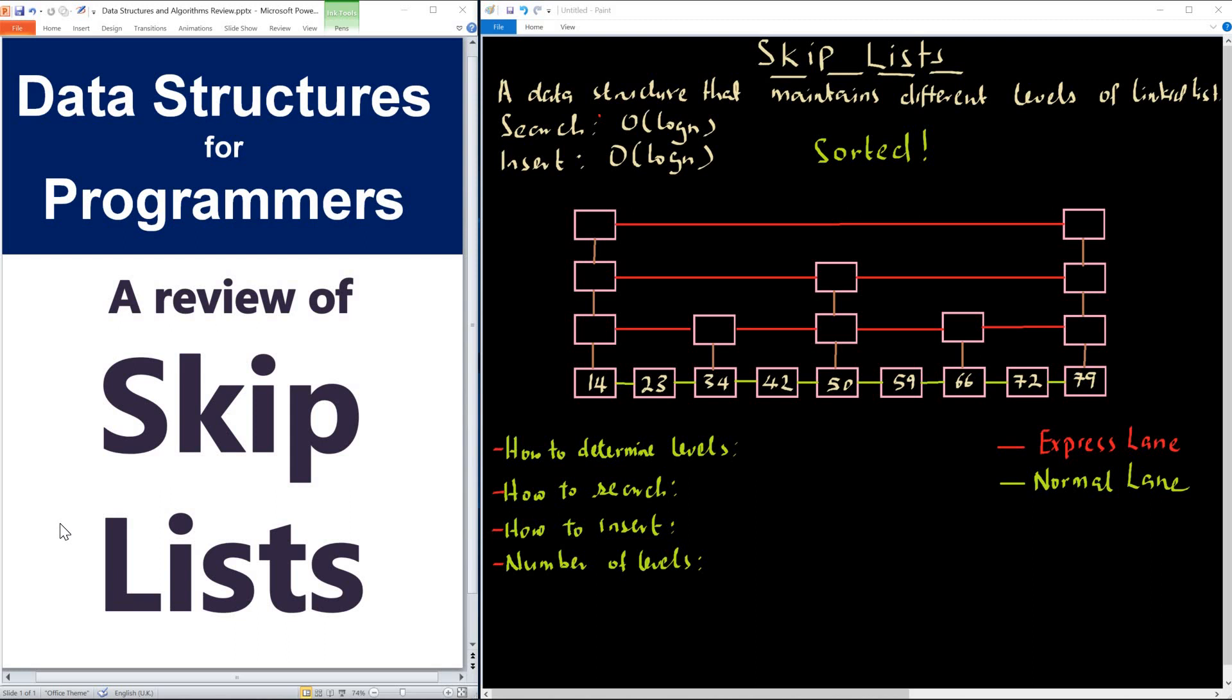Today we are going to be talking about skip lists. You may have heard of this data structure skip list, or maybe you may not have heard of it. It's an interesting data structure that you actually need to have in your belt. The reason is because it's an efficient data structure that has a search complexity of order of log N, and insert of order of log N. It's a data structure that maintains different levels of linked lists. Think of a skip list as a linked list, but then we now create additional layers on top.